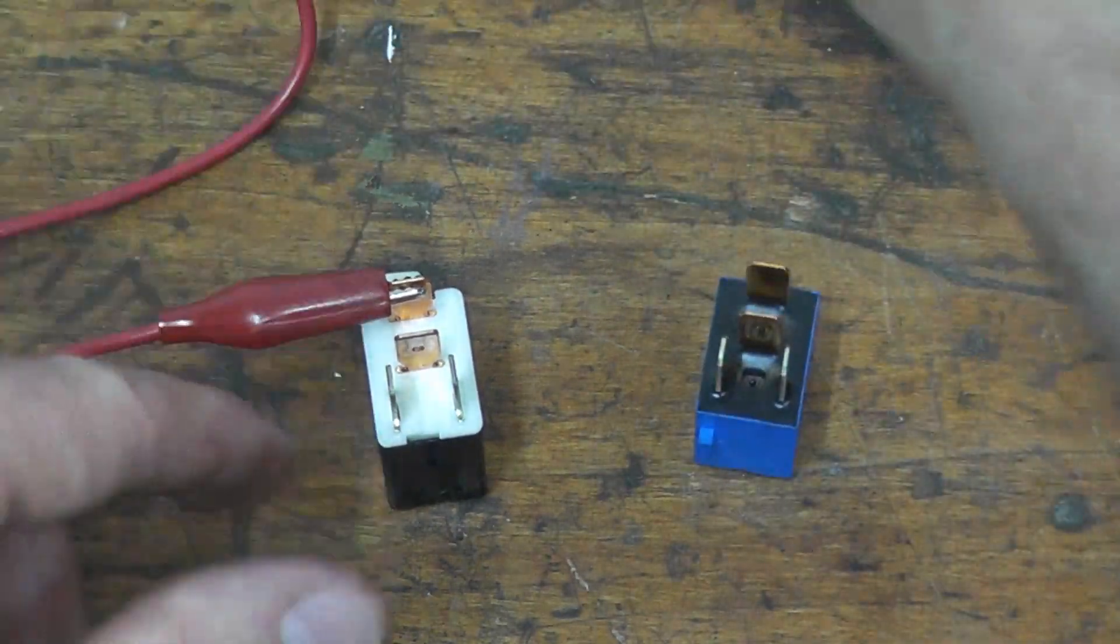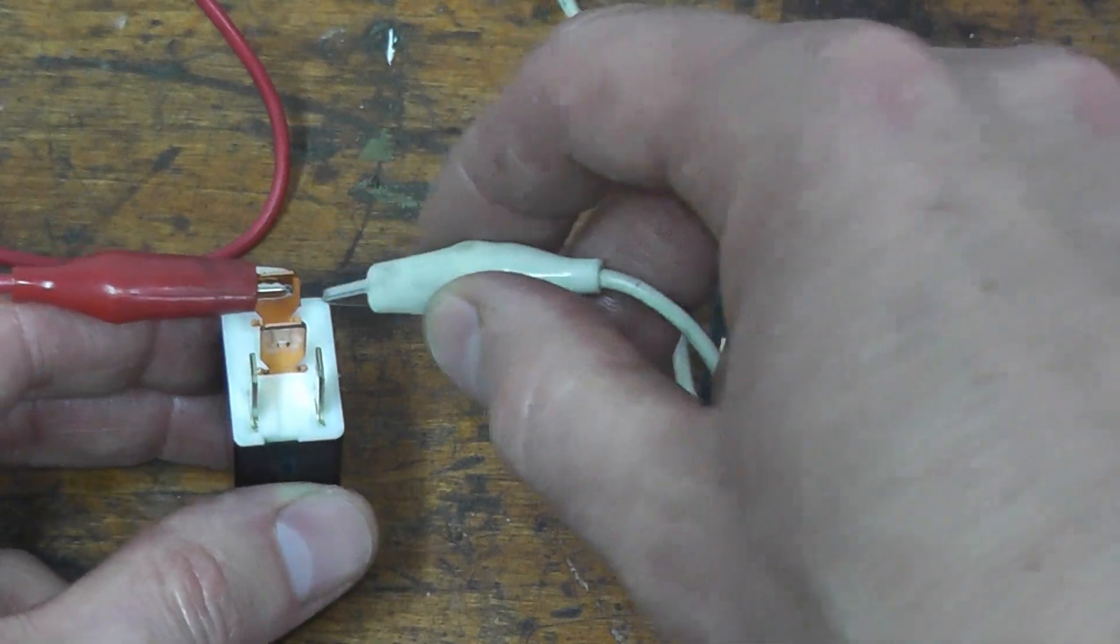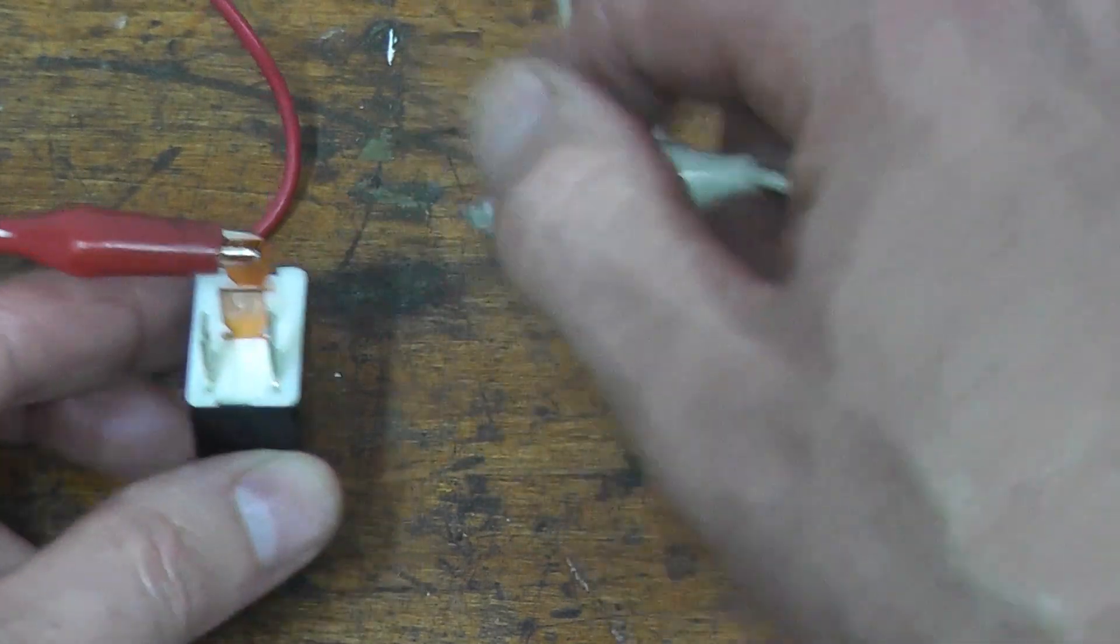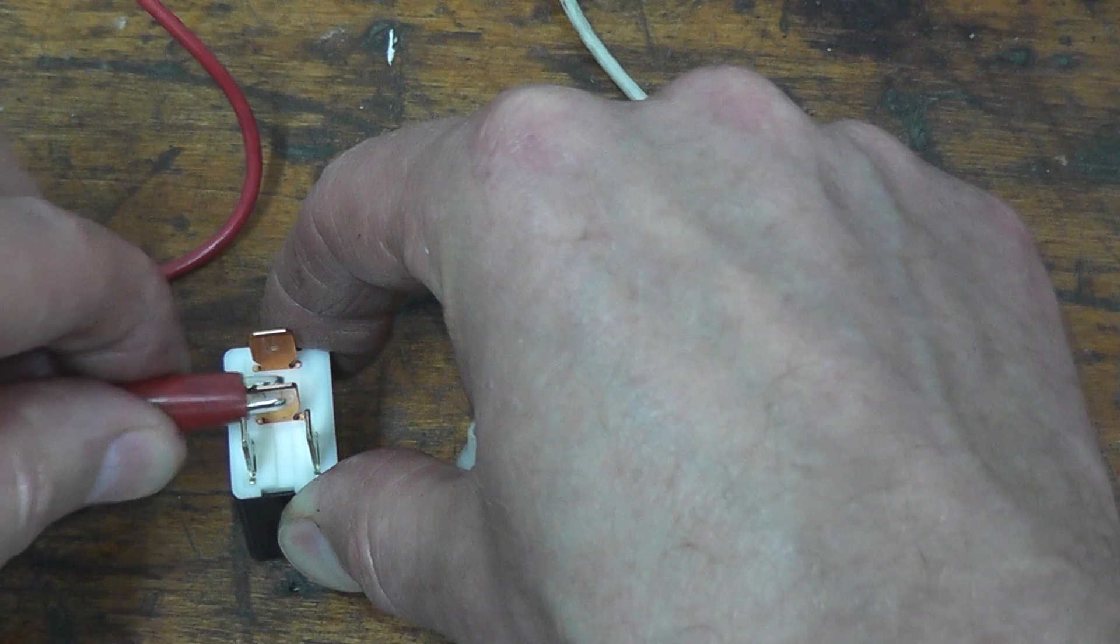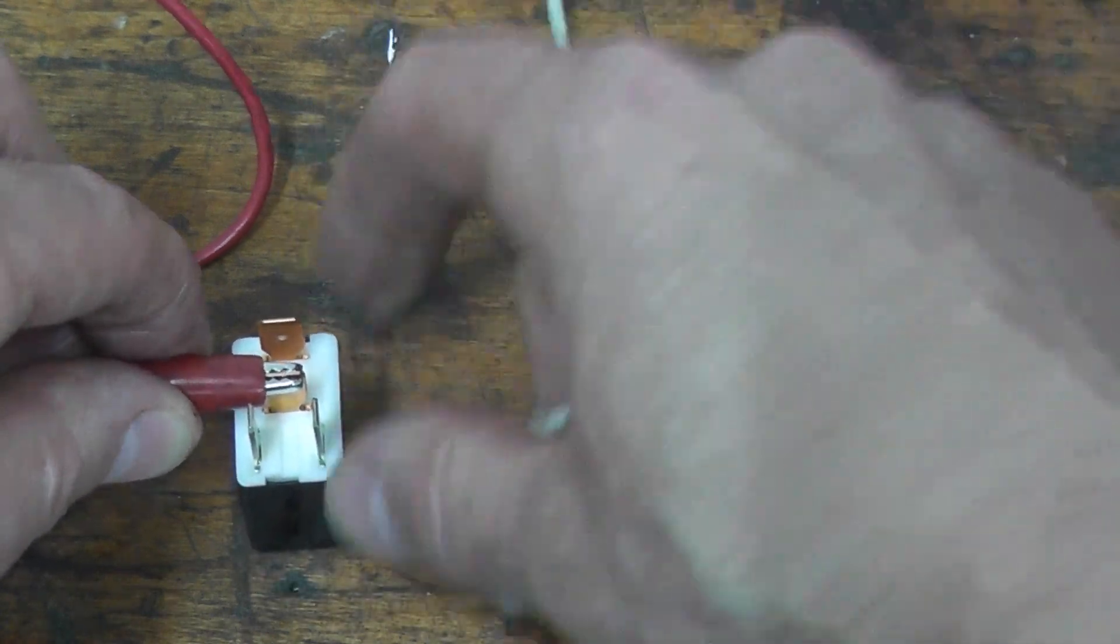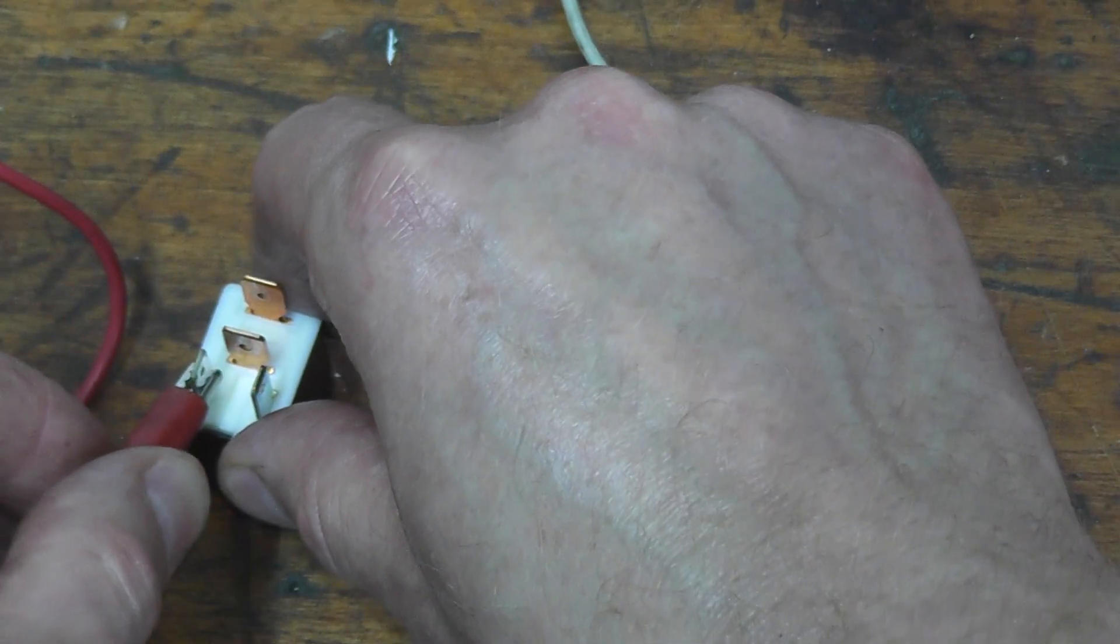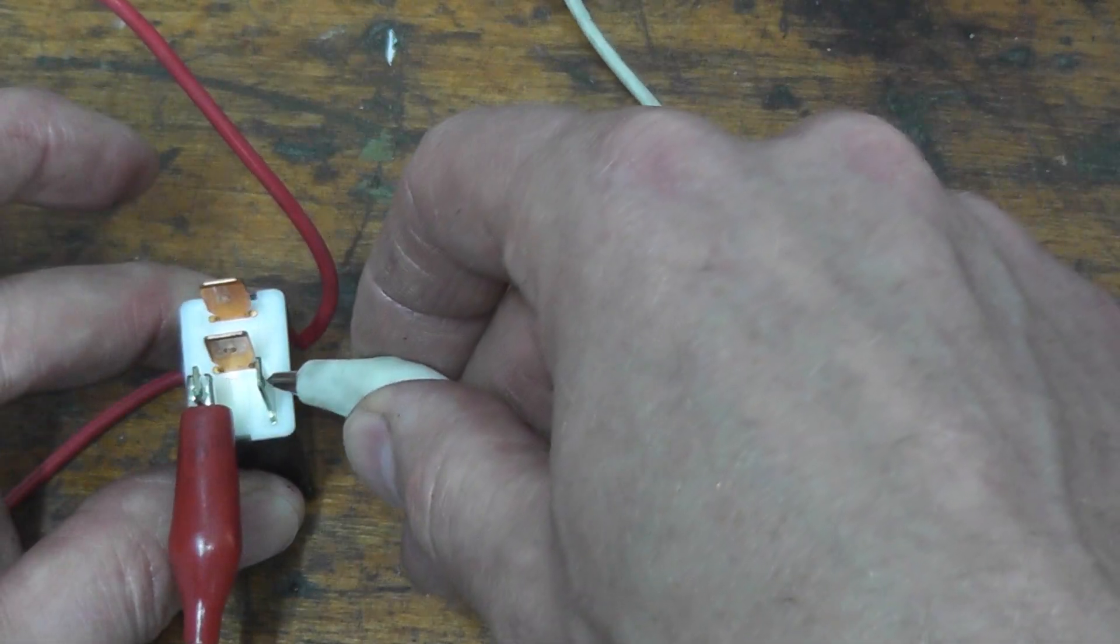You will hear a clicking noise if the relay is good. So nothing is going on here. You can even try flipping it. Nothing. Now let's try the vertical posts and there we go. You hear that?